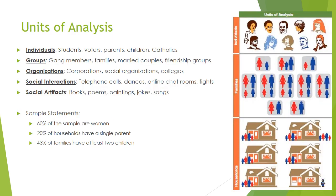We can conduct our study using individuals or aggregates. Individuals can be students, voters, parents, children, Catholics — any category that you can granulate down to one person. When individuals cannot be brought to the granular level, there are aggregates. When talking about gang members, we might not have interviewed individual gang members — we might have been looking at an entire group: this gang, that gang. We might look at families, households, or organizations like GE, Walmart, McDonald's, colleges like UB, UMBC, or UMD.